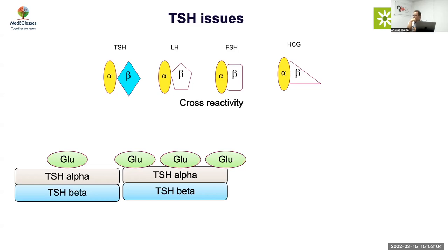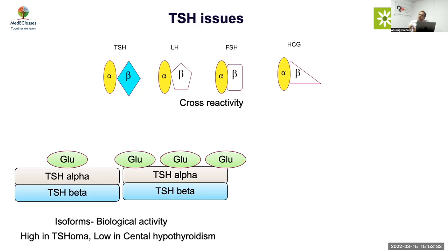The alpha and beta subunits of TSH isoforms are the same but glycosylation differs. Immunoactivity will be the same, but bioactivity will be different. Bioactivity will be falsely low in certain conditions and falsely high in TSH-producing tumors. These isoforms can't easily be measured — for growth hormone, a standard isoform has been established, and something similar is coming for TSH but is not yet standardized.